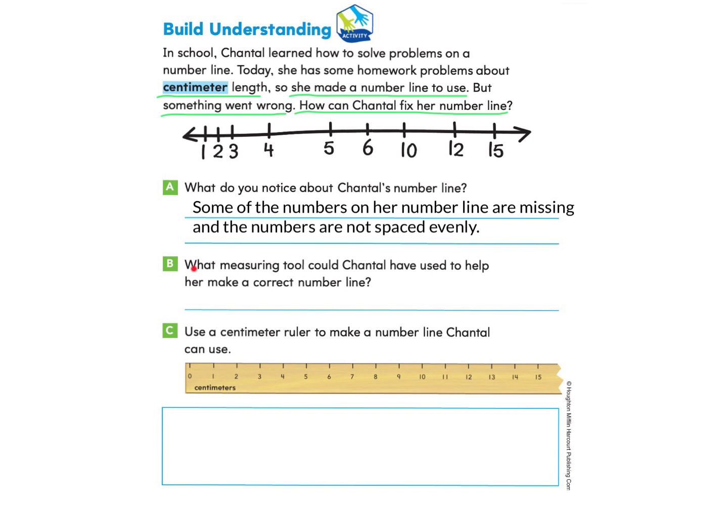Let's look at part B. What measuring tool could Chantel have used to help her make a correct number line? Part C asks us to use a centimeter ruler to make a number line Chantel can use. You may want to pause and try this part on your own with your own centimeter ruler or you can follow along with me.